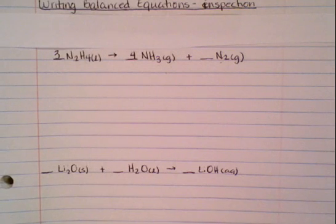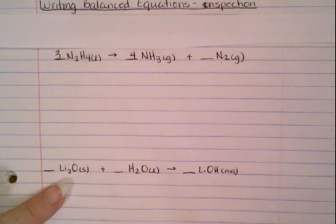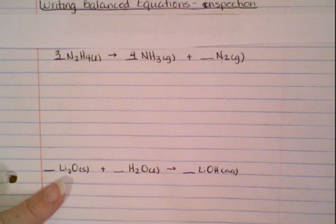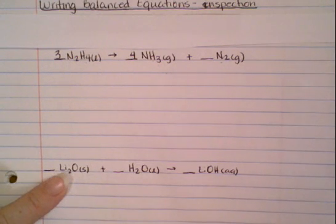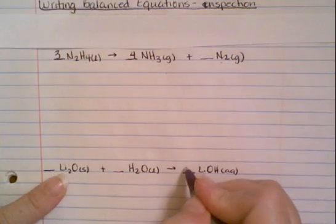Now, what if I have the one below? It's the same thing. I want to read from left to right. I notice I have 2 lithiums on the left, so I'm going to need 2 on the right.